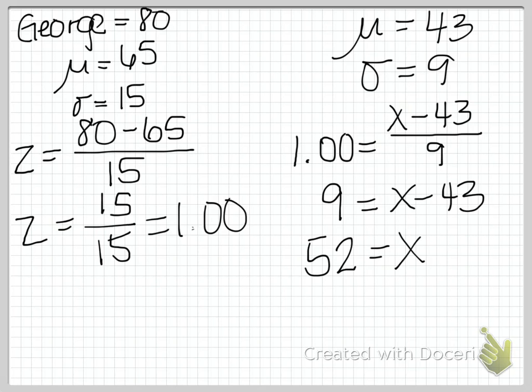So now we know that if George had been in Samuel's class instead of Julie's, he probably would have scored a 52. Or in other words, a 52 is equivalent to a score of 80 in the other class. Again, we're able to compare apples to oranges.